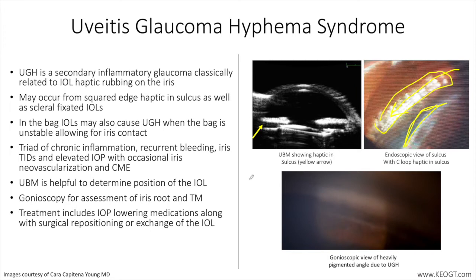Ultrasound biomicroscopy is helpful to determine position of the IOL. You can see here a UBM image with a tilted optic on the intraocular lens and the haptic sitting posterior to the iris and in the sulcus, as opposed to the opposite side haptic, which is sitting in the capsular bag.